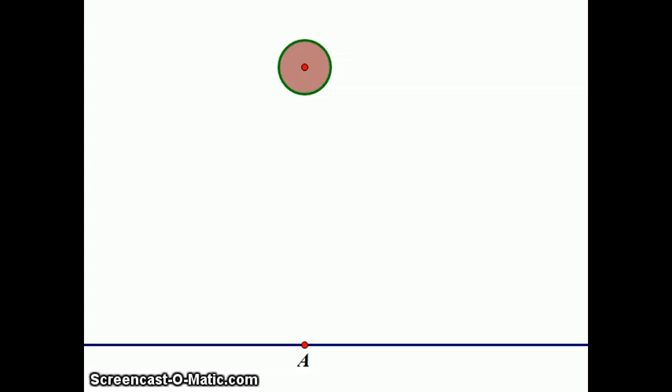Galileo did a lot of experimentation with falling bodies. And he noticed something: when you drop something, it doesn't fall at a constant velocity. Here's an animation—you can watch it.